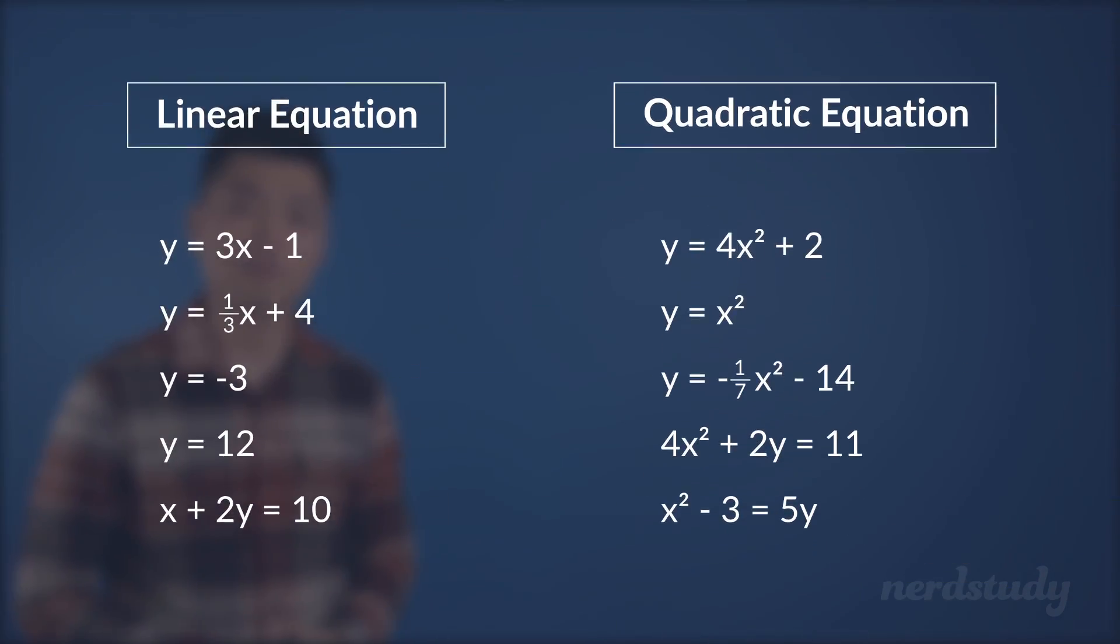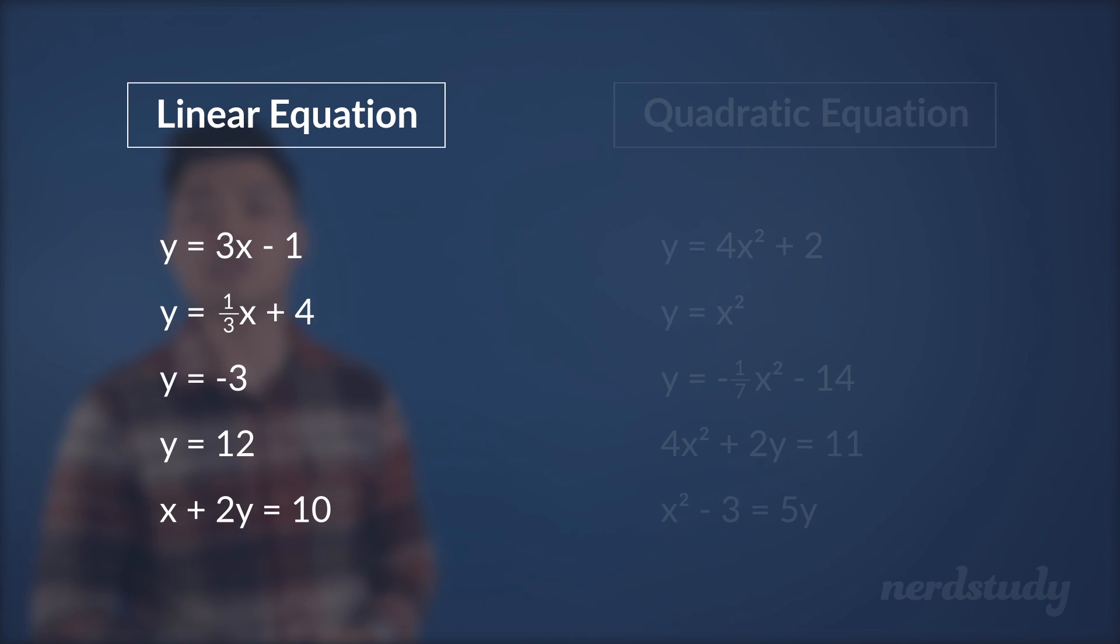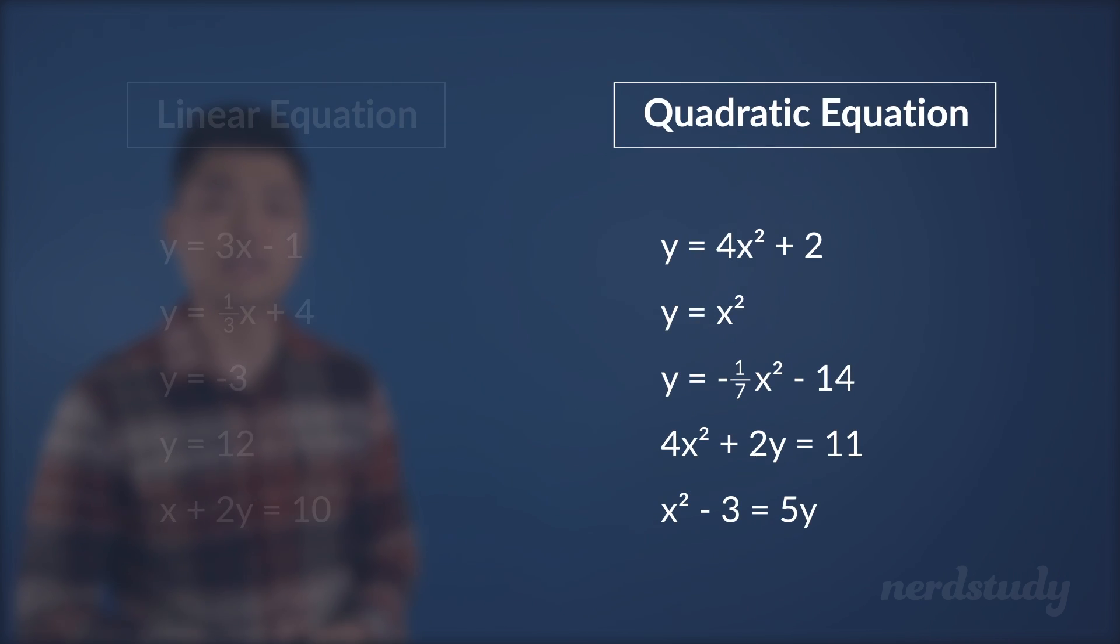Awesome. So before we end this video, I want to compare what we know about linear equations with quadratic relations. A linear equation never has an exponent of 2 in it. Take a look at some of the linear equations on the screen. Notice how we don't have an exponent of 2 anywhere here. Now, let's take a look at some of the examples of quadratic equations. For these, notice how there's an exponent of 2 on the x. This is something you can expect to see from quadratic equations.